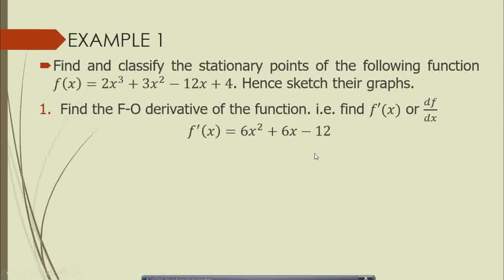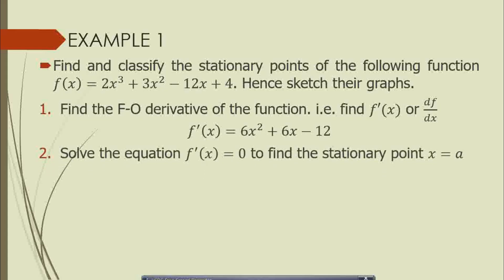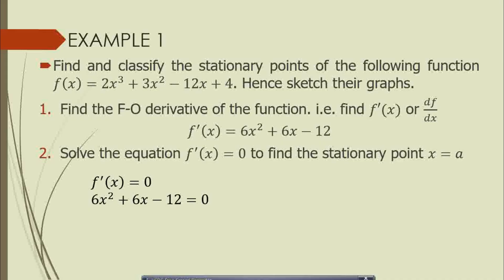After finding the derivative, we need to apply the first order condition. The first order condition requires that we set our first derivative equal to zero, so we have 6x² + 6x - 12 = 0.